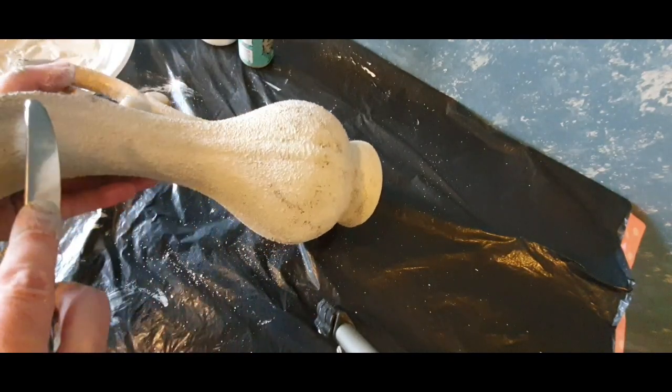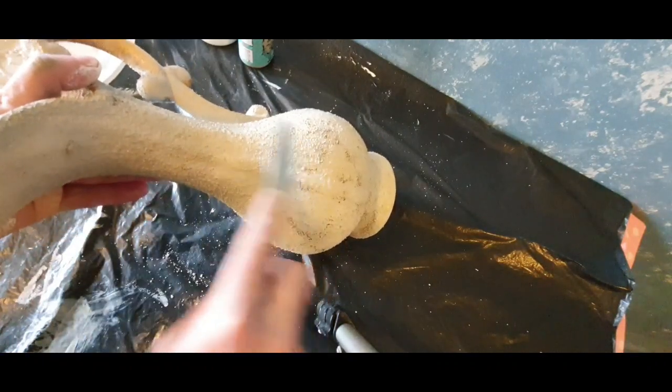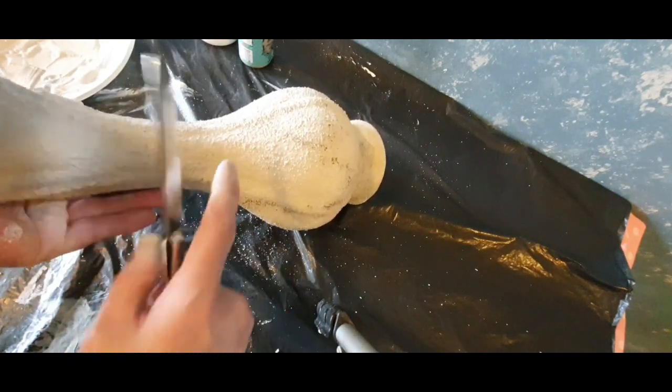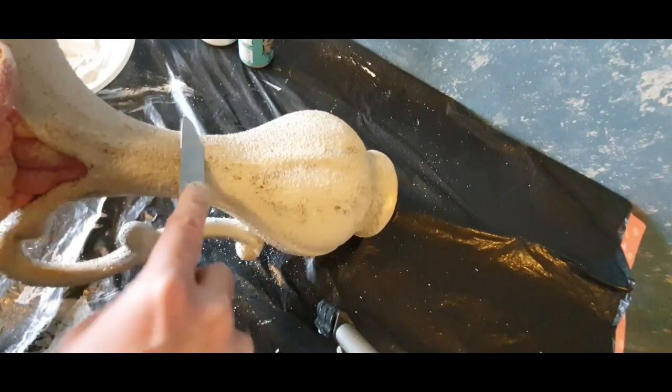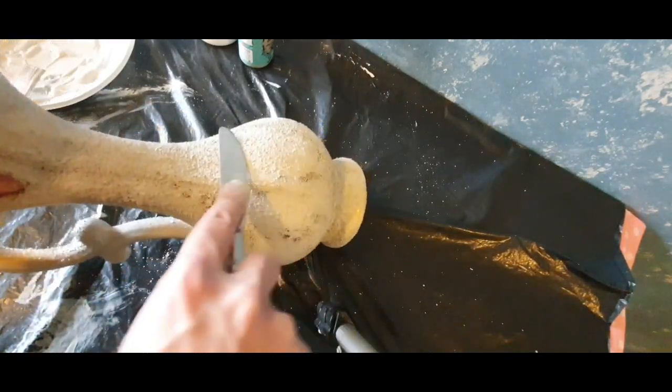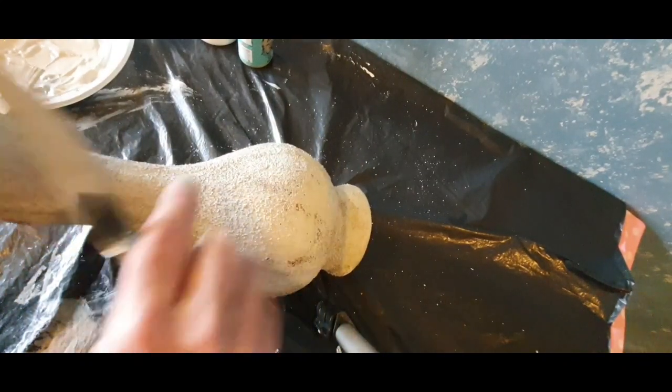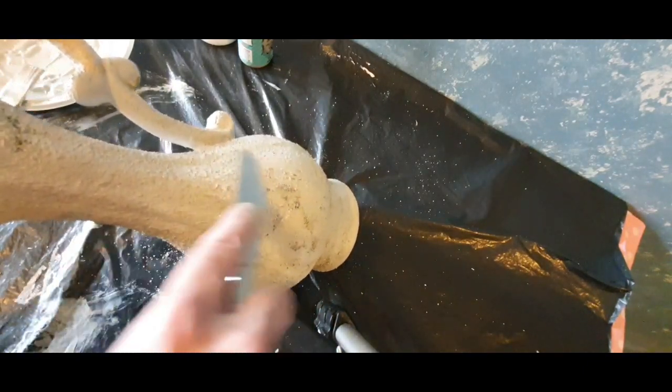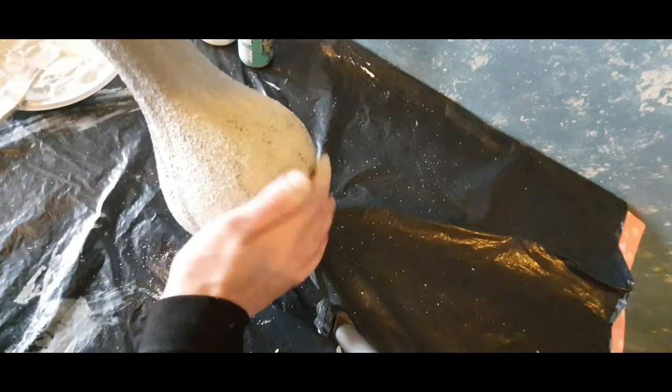Bu işlemi yaparken bıçağı eğimli tutmanız lazım. Böyle dik bir şekilde yüzeyin üzerinden götürmemeniz lazım. Şu an elimde tuttuğum gibi bıçağı yüzeyde gezdirmeniz gerekiyor. Burada hem fazla olan irmikleri dökmüş oluyorum. Hem de irmiği boyaya doyurmuş oluyorum bu şekilde. Ezmiş oluyorum. Böylece yüzeyde farklı bir antik doku, güzel bir kadifemsi doku oluşuyor. Bıçağın hareketine dikkat edin olur mu?